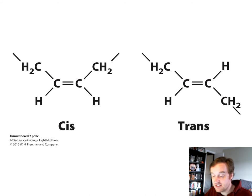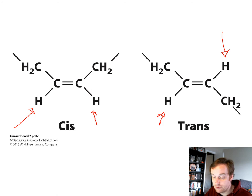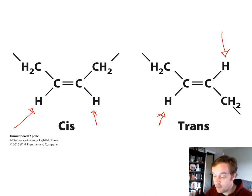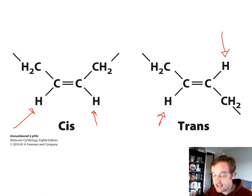Unsaturated fatty acids with double bonds have two configurations: cis and trans. In the cis configuration, hydrogen bonds are on the same side of the double bond; in trans, they are on opposite sides. The cis configuration introduces a rigid kink that prevents tight packing into a membrane layer — the chains can't all just stack on top of each other because of those kinked shapes. In the trans configuration, there is less of this kink and the chains can form denser layers.